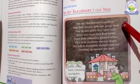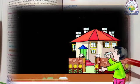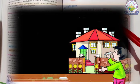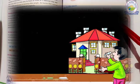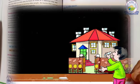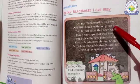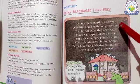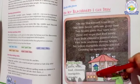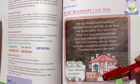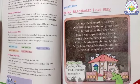On my blackboard I can draw one little house with one green door. I can draw two brown gates that open wide.